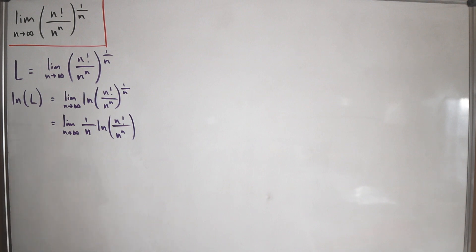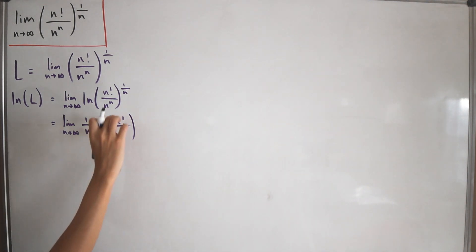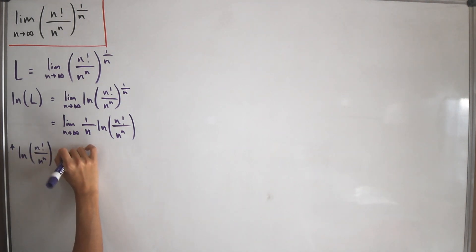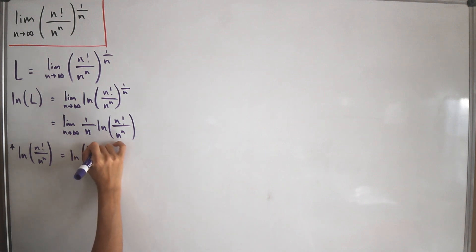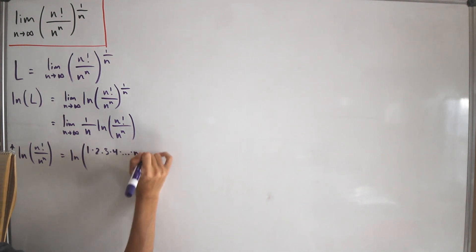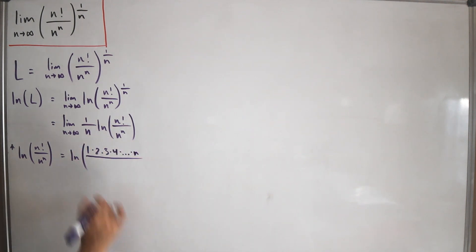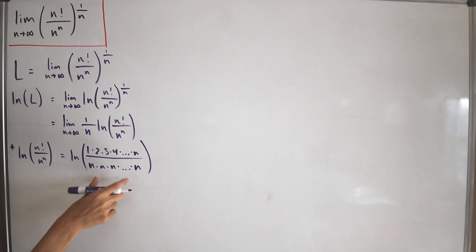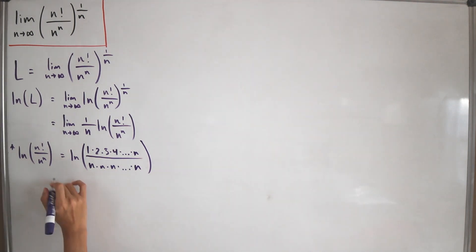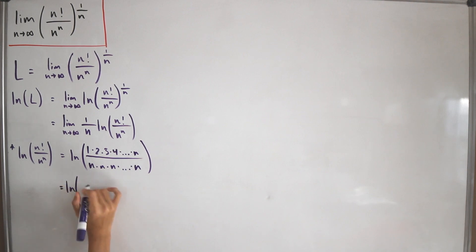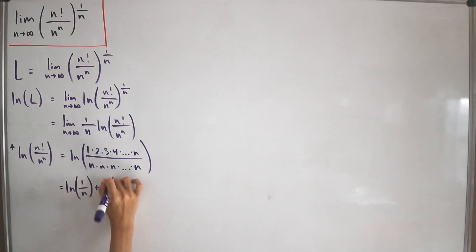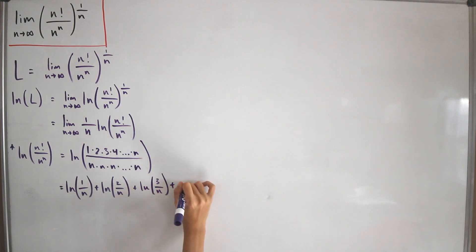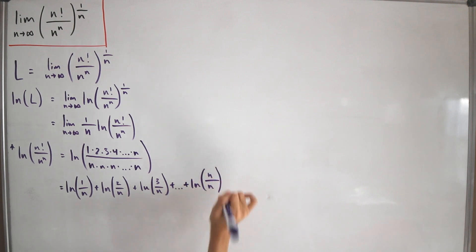Now let's look at the natural log of n factorial over n to the power n. Expanding: the numerator n factorial is 1 times 2 times 3 times 4 all the way up to n, and the denominator n to the power n is n times n times n, n times over. Applying log properties, this becomes ln(1/n) + ln(2/n) + ln(3/n) + ... + ln(n/n).